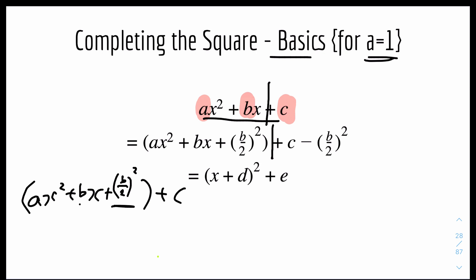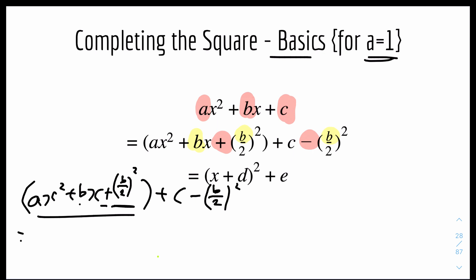What you add inside the bracket, you have to undo outside the bracket to keep it balanced. If you plus inside, you have to minus outside. In every case, we plus the new c coefficient inside, which means you have to minus the new c coefficient on the outside. These are the same values. Therefore this simplifies as a difference of two squares — you can write it as (x + d)² + e, where e is just a simplification of the outside terms.